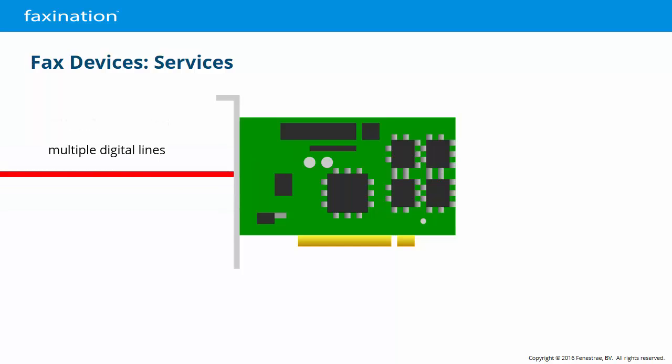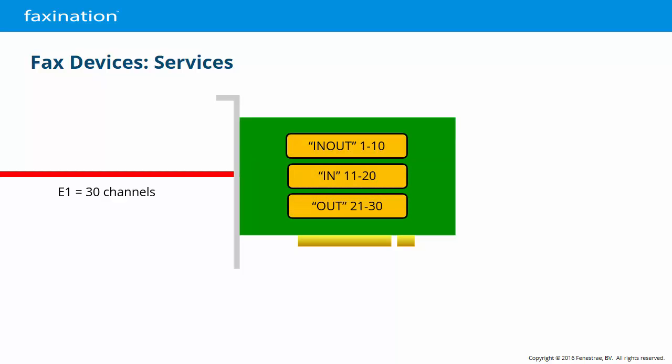A digital fax card may only have a single cable running into it, but a full E1 card can support 30 simultaneous channels. Each fax device is identified by at least one service, but we can divide those 30 channels into as many services as we need. For example, here we've divided a 30-channel fax card into three FaxNation services: channels 1–10 for both inbound and outbound calls, channels 11–20 dedicated for inbound only, and channels 21–30 dedicated for outbound only.